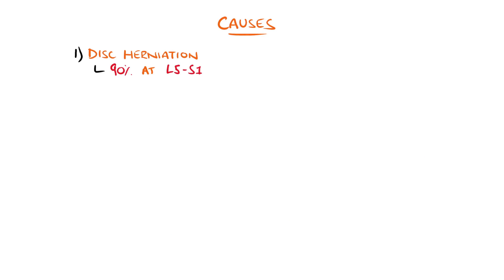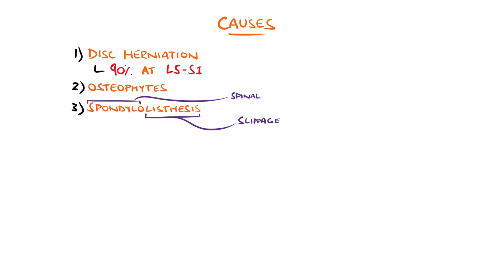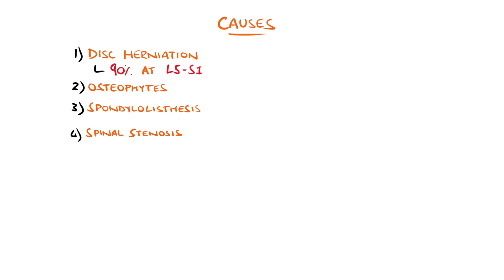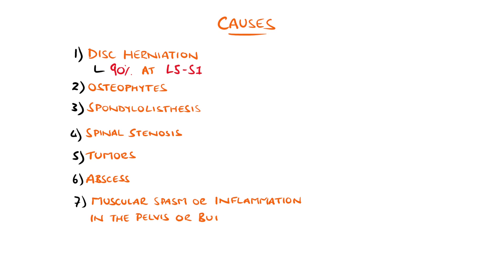Other causes include bony irregularities like osteoarthritic osteophytes or spondylolisthesis, where a vertebrae itself slips relative to its neighbour. Lumbar spinal stenosis, meaning narrowing of the spinal canal, can also be a cause, particularly in more elderly patients, and rarer causes include tumours and abscesses. Causes external to the spine can also cause it, such as muscular spasm or inflammation in the pelvis or buttocks.